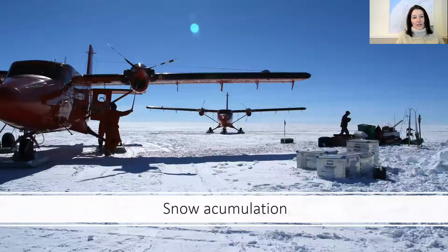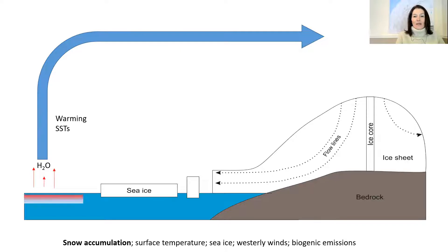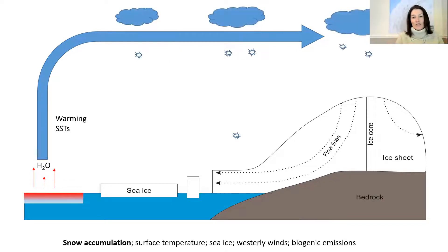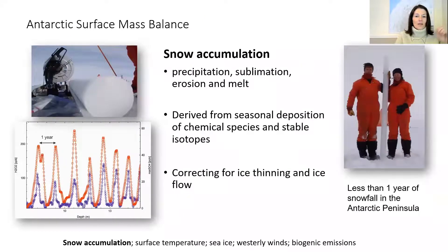The first topic is snow accumulation. Ice cores are made up of compacted snowfall — they're capturing moisture transport. Moisture evaporates from the ocean surface and is deposited in the ice. The amount of snow deposited depends on several factors, including warming sea surface temperatures resulting in increased evaporation and hence more snowfall, and changes in sea ice. Removing sea ice takes away the lid on the surface ocean, increasing available surface moisture and resulting in more snowfall on the ice sheet.